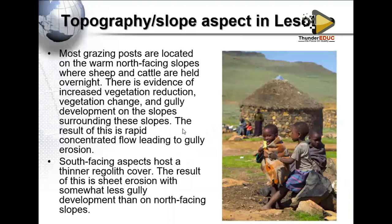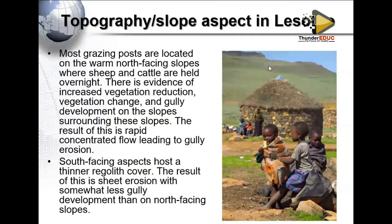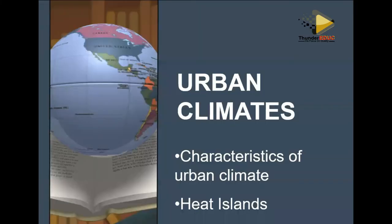Looking at slope aspect in real-world terms: the south-facing slope hosts thinner soil development due to sheet erosion. The north-facing slope is warmer and used for farming and grazing — most grazing posts are located on warm slopes. There is evidence of increased vegetation reduction on the warm slope, and garden development on surrounding slopes can lead to erosion from rapid concentration flows.